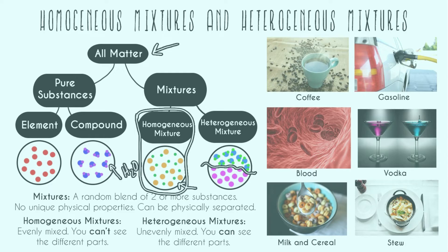Now let's do the practice problems. First, coffee. We know we're dealing with mixtures here. Coffee is pretty homogeneous — when you stare at it, it pretty much looks like brown liquid with no distinct different parts. The only alternative would be something like Turkish coffee where there's ground beans at the bottom, but for the most part coffee is homogeneous.